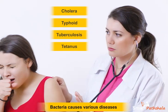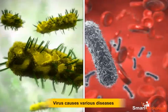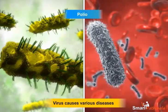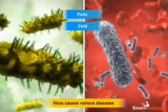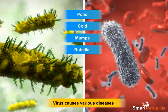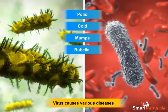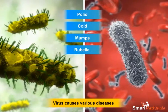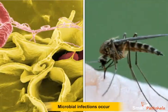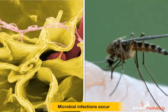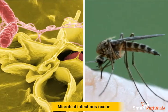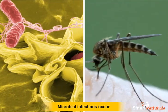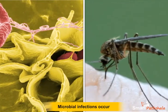Virus causes diseases like polio, cold, mumps, rubella, etc. Malaria and amoebic dysentery fall under the category of diseases caused by protozoan parasites.